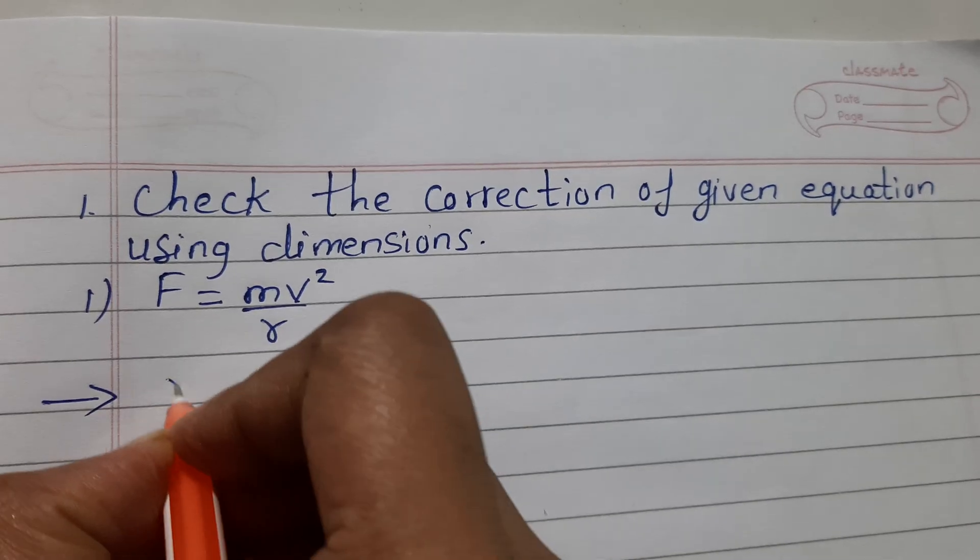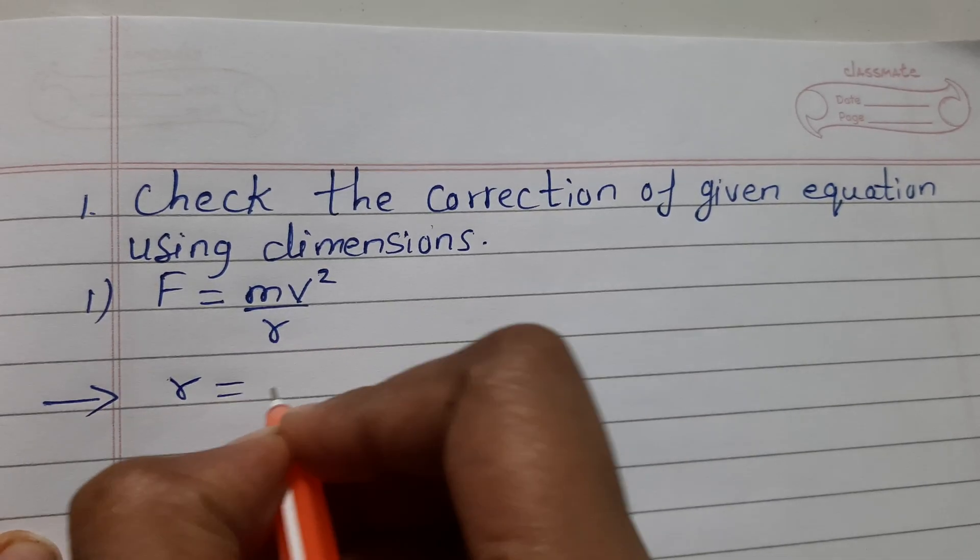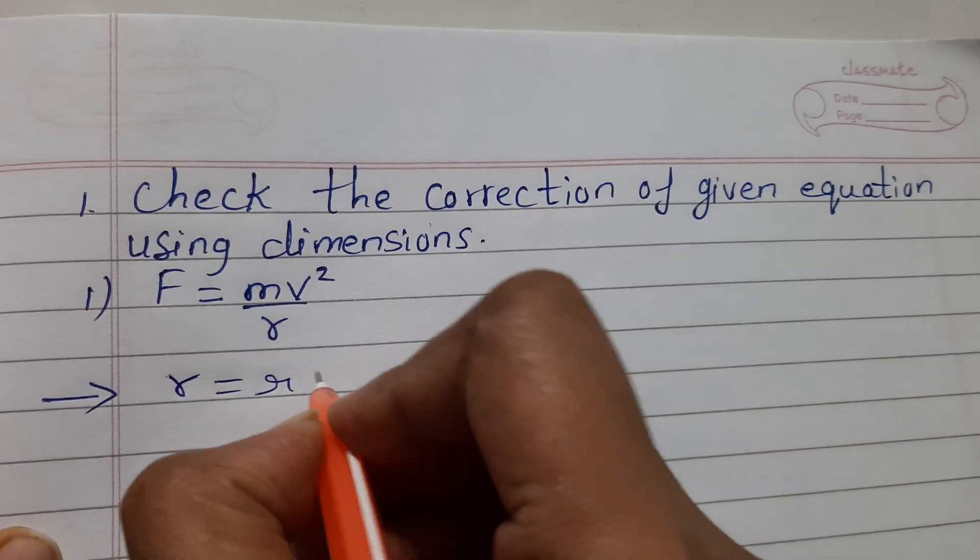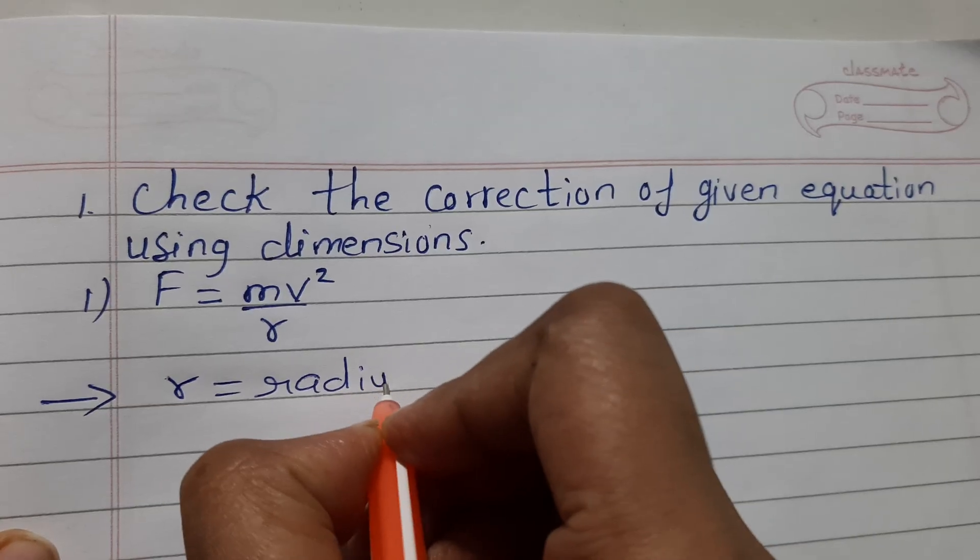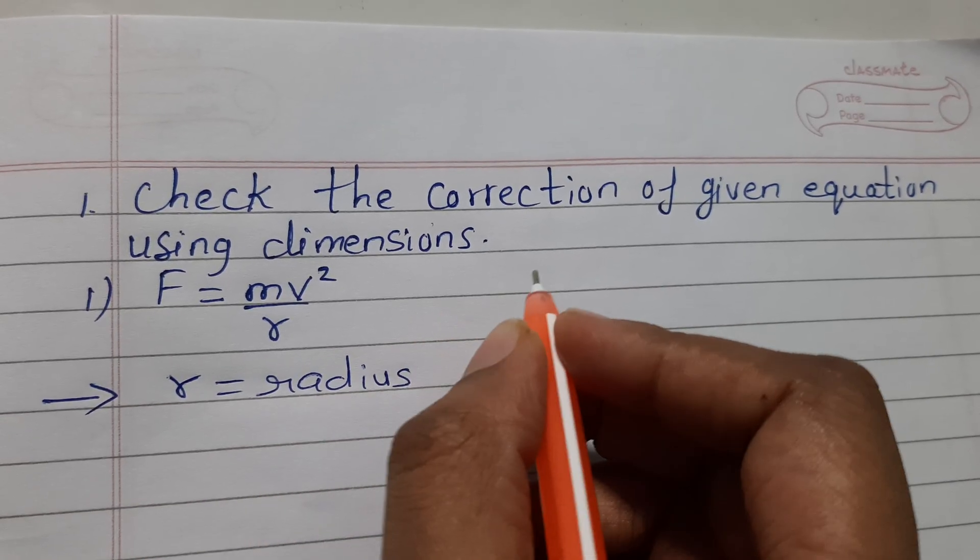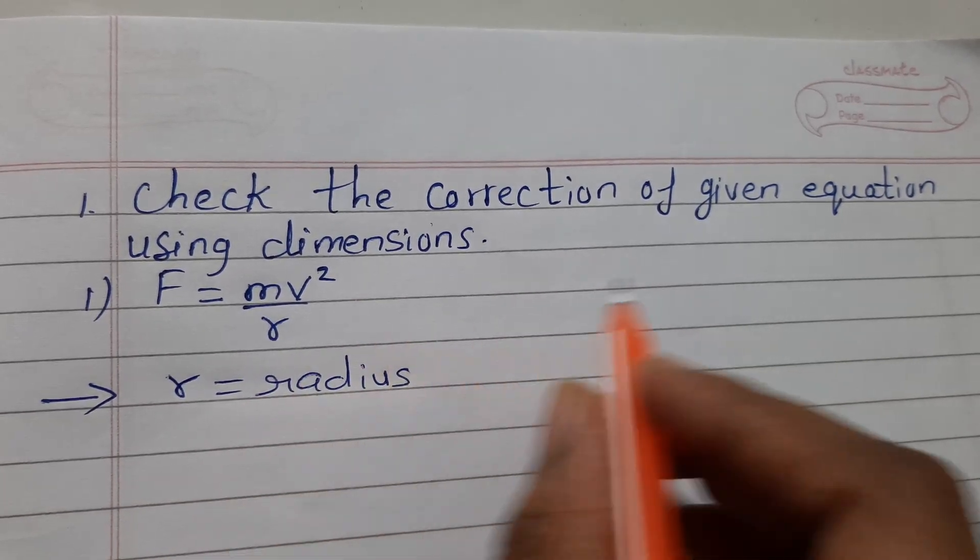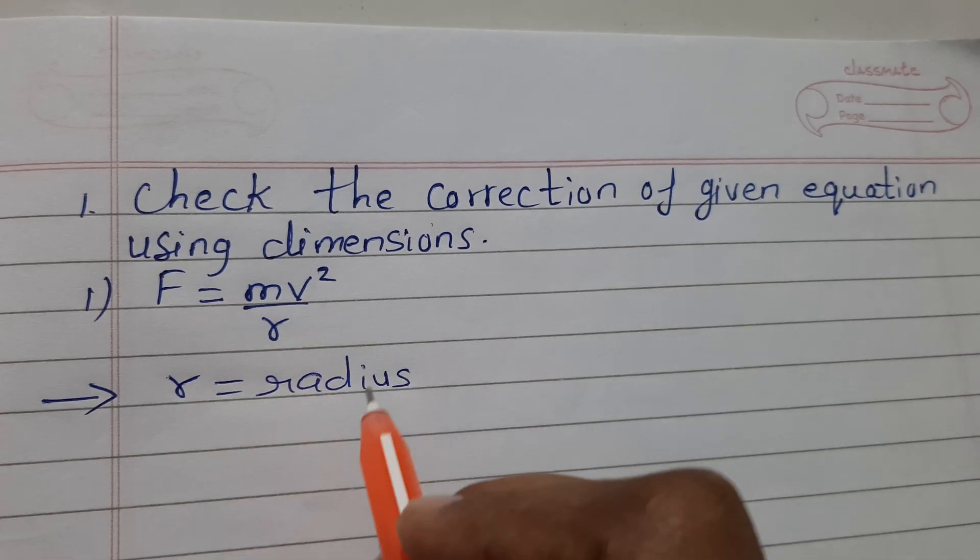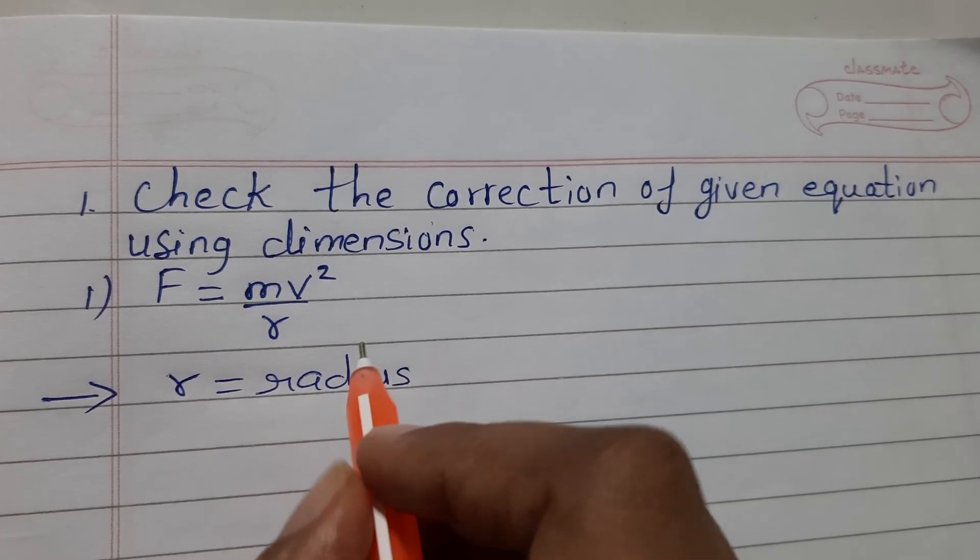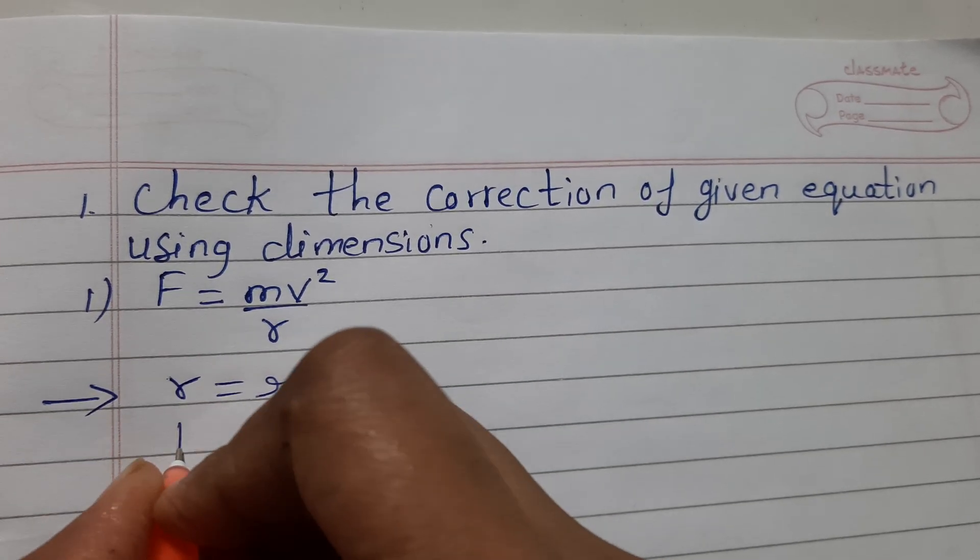r is radius. We have to check the correction of this given equation using dimensions.